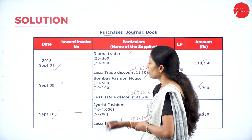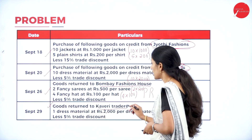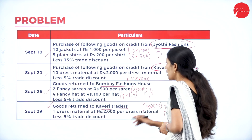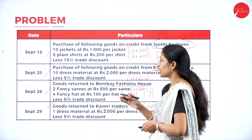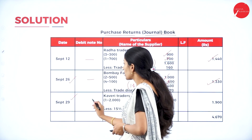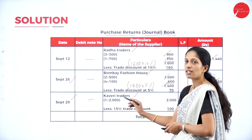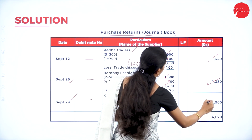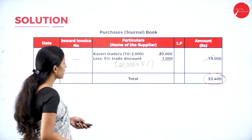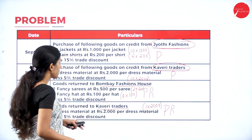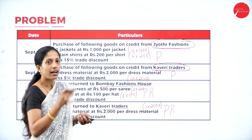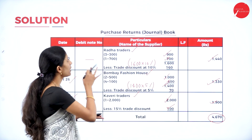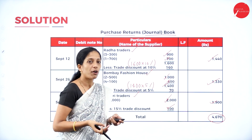Last purchase returns entry — September 29th, goods returned to Cauvery Traders, no debit note number. Calculate: 1 dress material × Rs. 2,000 = Rs. 2,000. Less trade discount at 5%: 2,000 × 5% = Rs. 100. So 2,000 − 100 = Rs. 1,900. No other purchase return transactions. Total of the purchase returns book = Rs. 4,670.